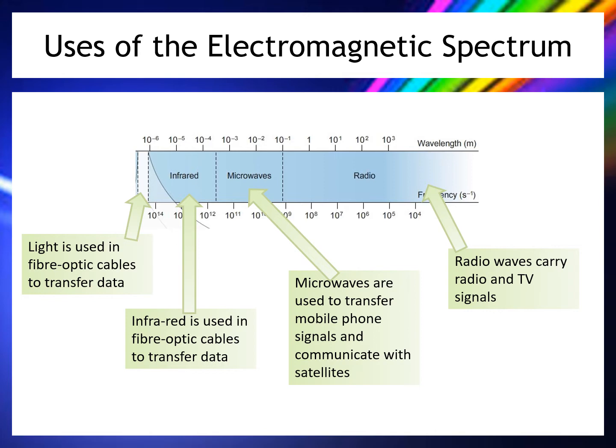Moving along to the infrared spectrum: infrared and light are both used in fiber optic cables. Fiber optic cables connect computers to the network in schools and workplaces, and they form most of our telephone and internet broadband infrastructure. Sending data through a fiber optic cable rather than a wire allows much more data to be transferred much more quickly — without them, we'd still be on dial-up.